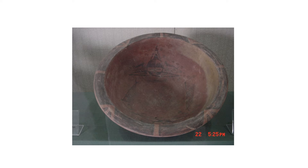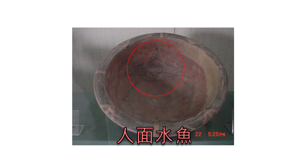왜냐하면 이것이 만약 중국 최초의 한자라면 한자의 역사는 3천 년 이상 더 오래된 것으로 바뀔 수 있습니다. 여기서 굉장히 많은 도문들이 발견됐고 토템 신앙도 많이 볼 수 있어요. 인면어호, 얼굴은 사람인데 물고기인 문양이 있습니다. 이 동네 사람들은 토템이 물고기였던 것 같아요. 물고기는 한 번에 어마어마하게 많은 알을 낳기 때문에 조상을 물고기라고 믿는 부족들이 많았던 것 같아요.